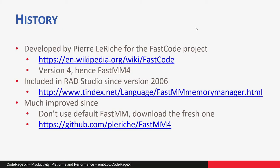To warm up, let's repeat some historical facts. FastMM was developed by Pierre Leriche for the FastCode project and it's actually the fourth version of his memory manager, hence FastMM4 or just FastMM. It was included in RAD Studio in version 2006 and it's still present in Seattle and Berlin. It has been much improved since the old days, so if you use any old version of RAD Studio you should definitely download and use FastMM from GitHub. This also holds for RAD Studio Berlin, which doesn't yet contain the latest changes in FastMM.